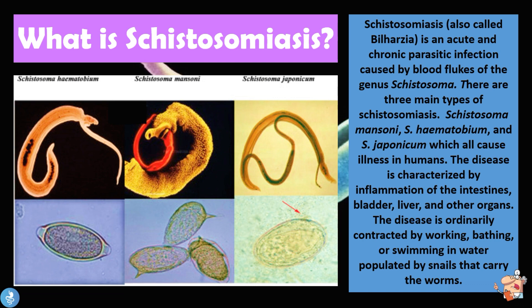The disease is ordinarily contracted by working, bathing, or swimming in water populated by snails that carry the worms. The three main species responsible for infecting humans are Schistosoma hematobium, which mostly infiltrates the urinary tract; Schistosoma mansoni, which primarily infects the GI tract; and Schistosoma japonicum, which also mostly infiltrates the GI tract. One usually contracts this disease by working, bathing, or swimming in freshwater rivers or dams populated by snails that carry the parasite.